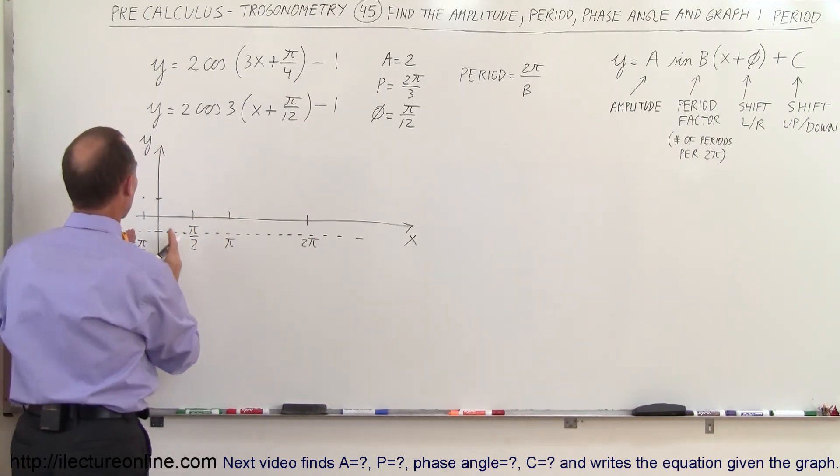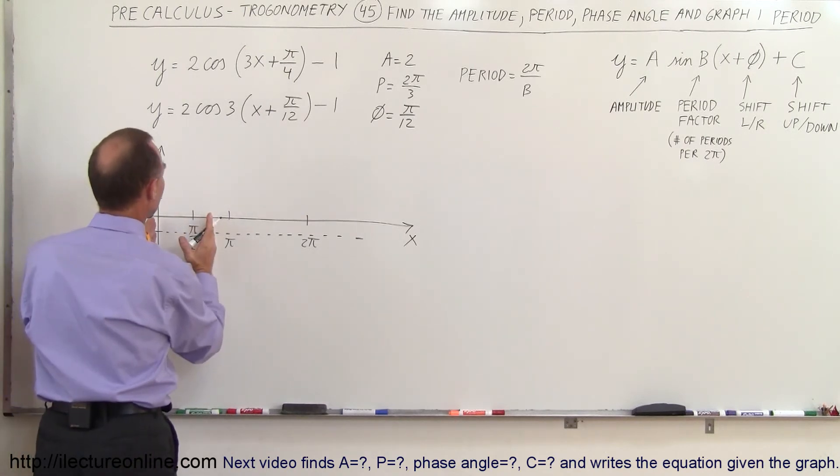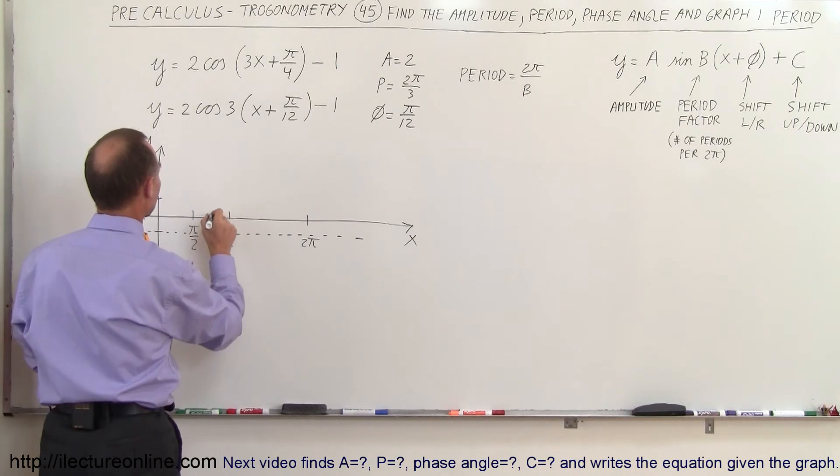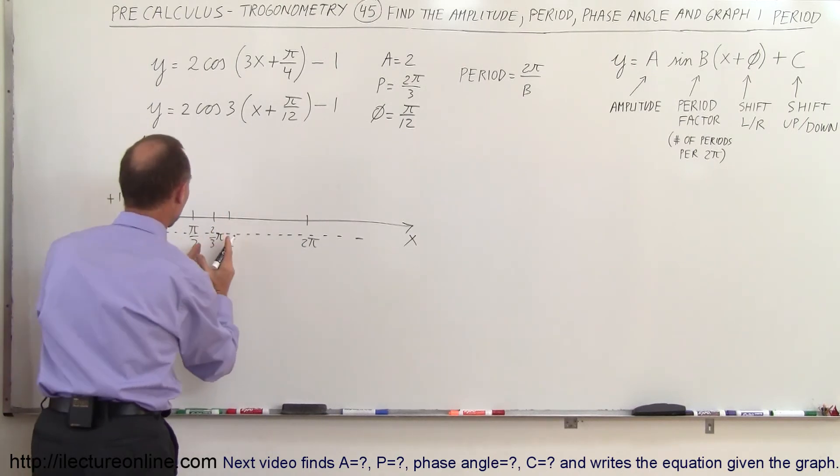So 2 thirds of a π normally would be about here right so this is a half a π, 2 thirds would be about here so that would be 2 thirds π but the whole thing has been shifted to left by π over 12.